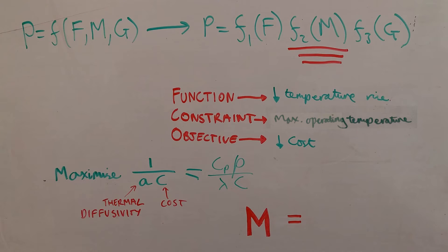Maximising this means we have a minimum thermal diffusivity and minimum cost. Therefore, M equals the specific heat capacity multiplied by the density all over the thermal conductivity multiplied by the cost.